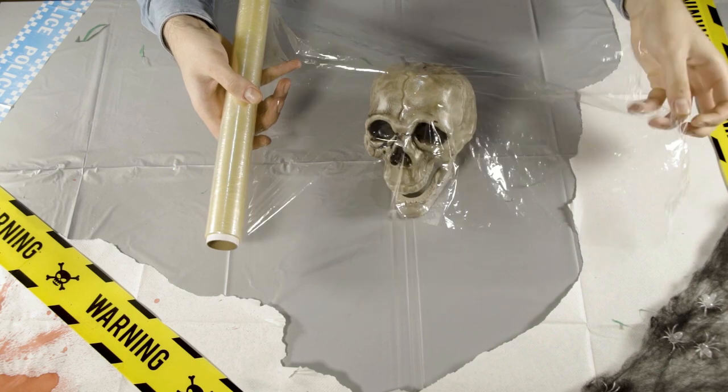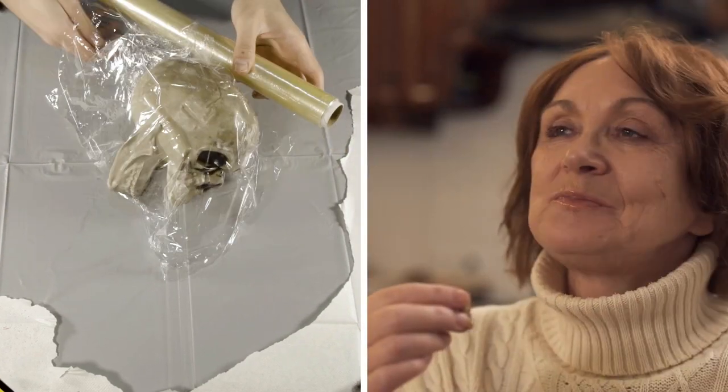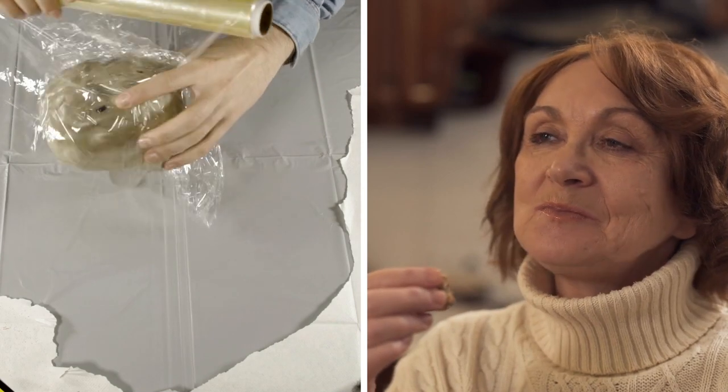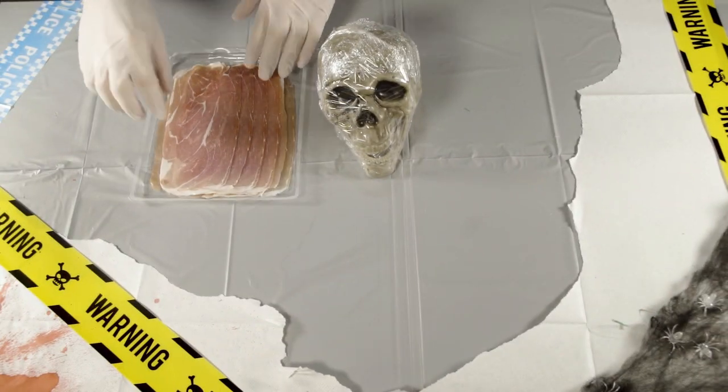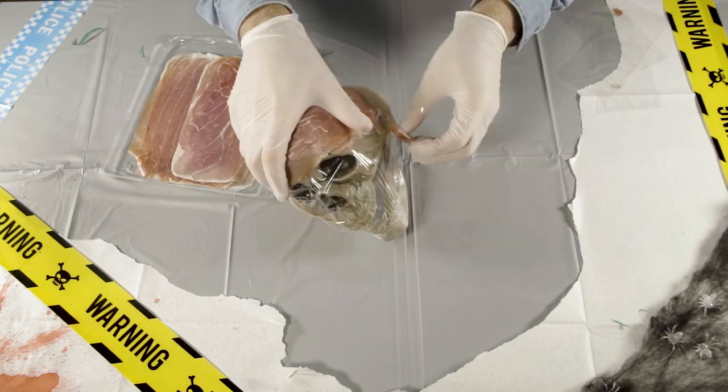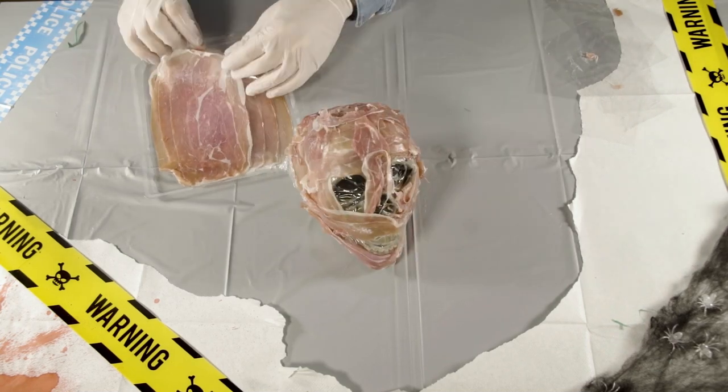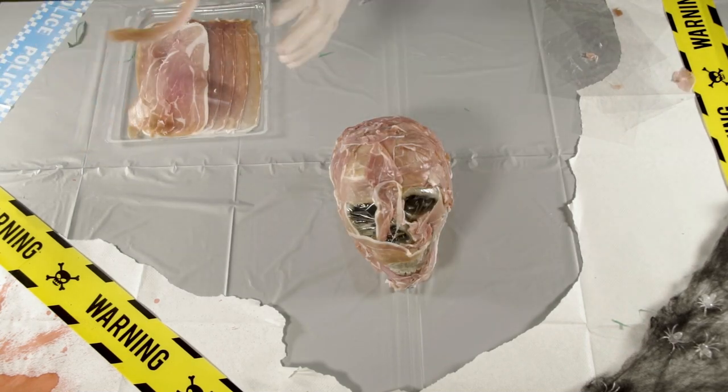First, cover the skull in some trusty saran wrap. After all, you're gonna be working with food, and you don't want your guests to get a taste of plastic. Next, grab some strips of delicious prosciutto ham and start laying them in all directions across the skull until it's completely covered. The end result should look something like a mummy made out of meat. So, go ham with it. Get it, ham?